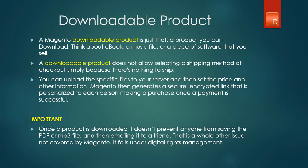One of the most important things about downloadable products — a question I get from a lot of customers — is: once you buy and download something, there's nothing preventing you from copying it and emailing it to a friend. That falls under something called digital rights management, which is not something that Magento covers. Magento simply gives you the capability of selling downloadable products on your website.